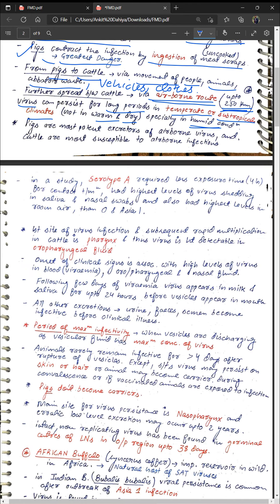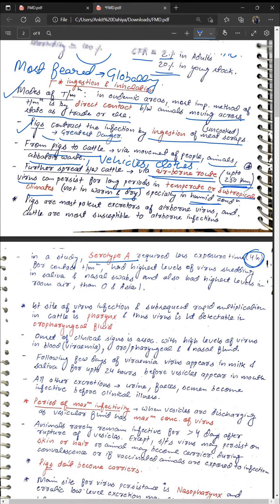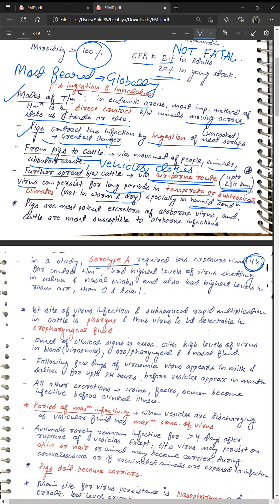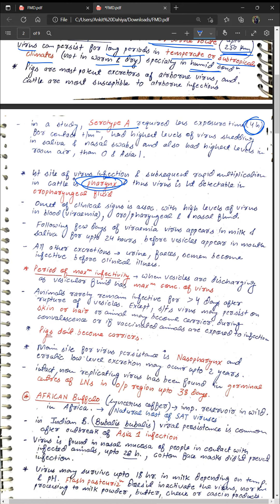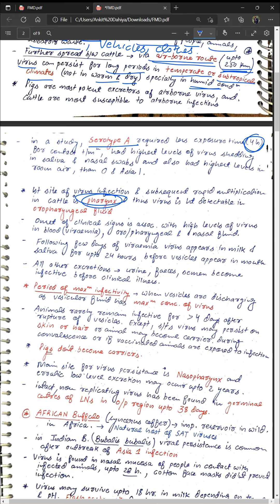A study showed that serotype A requires only four hours of contact to cause disease in susceptible animals, and it had the highest levels of virus shedding in saliva and nasal secretions compared to O and Asia 1. The first site of virus infection and rapid multiplication in cattle is the pharynx, which is why the virus first appears in oropharyngeal fluid. After viremia begins, the virus appears in milk and saliva up to 24 hours before vesicles appear in the mouth.